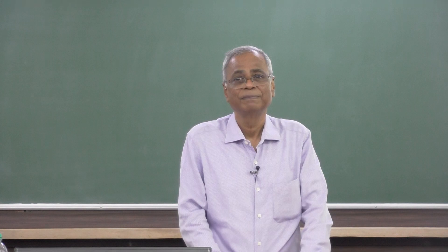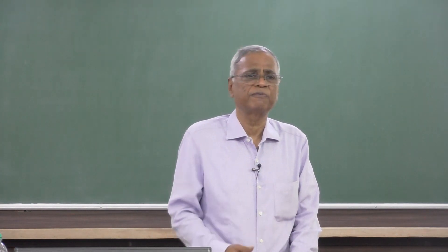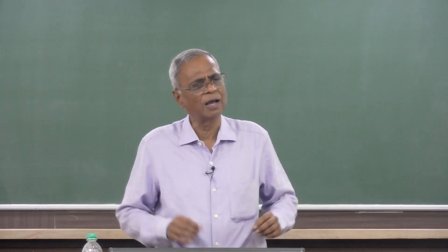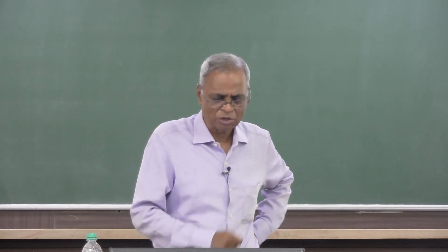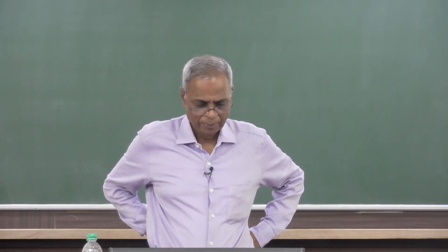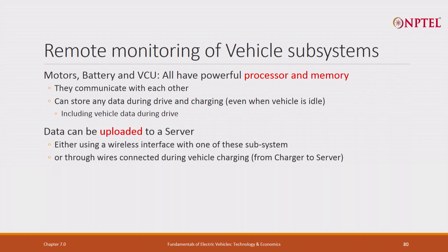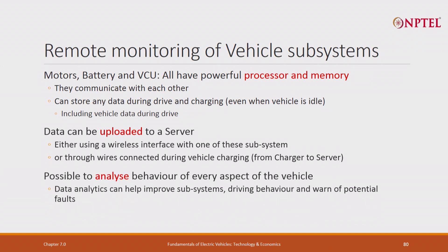What is happening to my battery? I can remotely monitor and improve performance using what is called the vehicle control unit, which monitors all other things: how am I driving, am I driving too fast — capturing all driver behavior. All these powerful processors and memory communicate with each other. They can store data while driving and while charging — charging primarily for the battery, others during driving. Data can be uploaded to a server using a wireless interface, or you upload only during charging, so the charger has to have that interface. Then it is possible to analyze the behavior of every aspect of the vehicle.